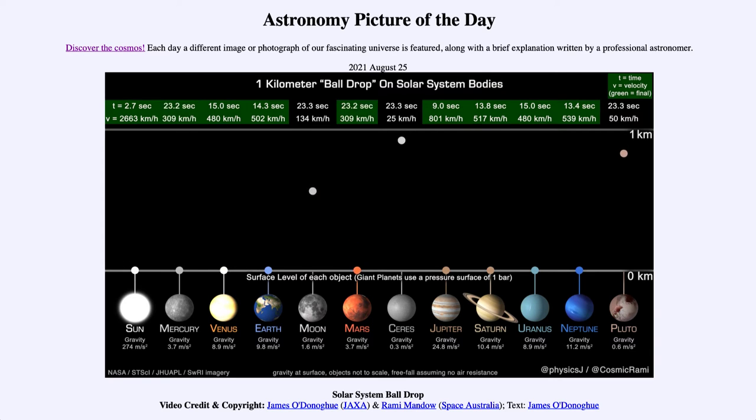Mercury and Mars, reaching at about 23 seconds. And now we're looking at just our moon, Pluto, and Ceres.